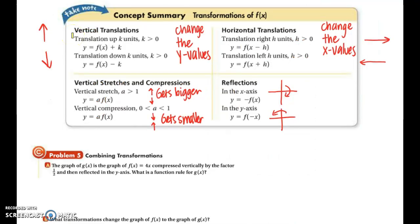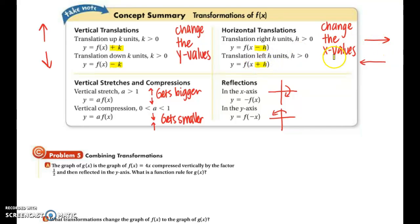This take-note box organizes all the information from today. For vertical translations, we add or subtract a constant k to change y values — adding k shifts the graph up, subtracting k shifts it down. For horizontal translations, the constant h is inside the function since we're changing input values — minus h translates right, plus h translates left. For a vertical stretch, multiply by a number greater than 1; for a vertical compression, multiply by a number between 0 and 1. For reflections, multiplying output values by a negative flips over the x-axis, and multiplying input values by a negative flips over the y-axis.